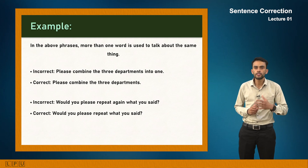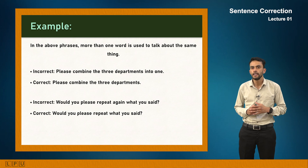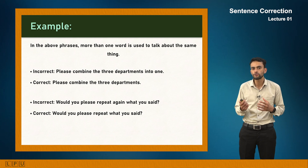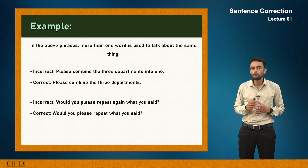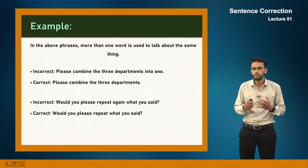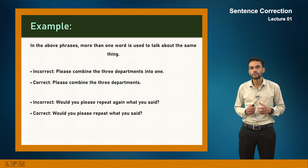For example: 'Please combine the three departments into one' — when you combine things they obviously become one, so just say 'Please combine the three departments.' Similarly, 'Would you please repeat again what you said?' is wrong because 'repeat' already means to say again. The correct form is 'Would you please repeat what you said?' That's the error of redundancy.